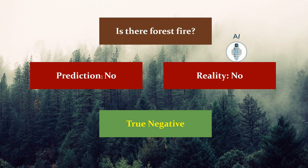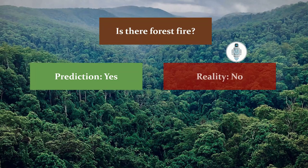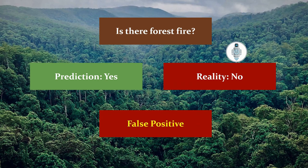In the third picture, there is no forest fire, but the machine is giving a positive prediction by saying yes. In reality there is no forest fire. This is a positive prediction which is not matching with the reality — hence this condition is termed false positive.